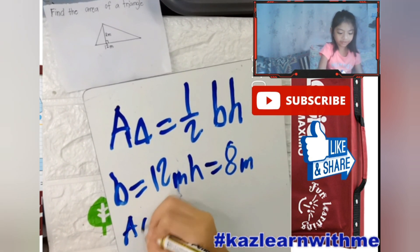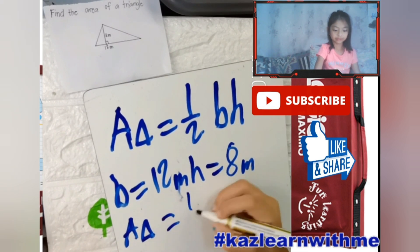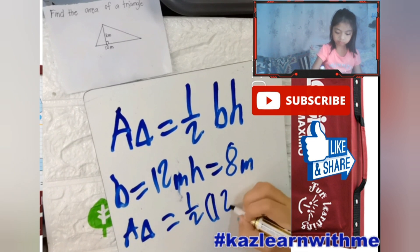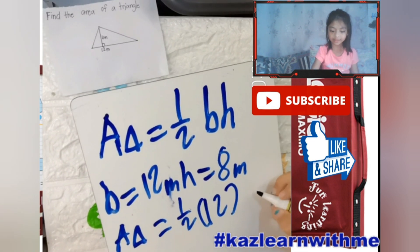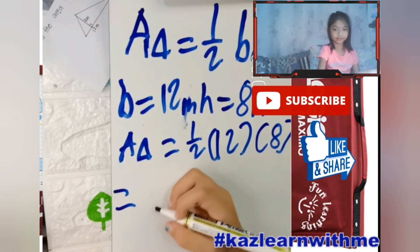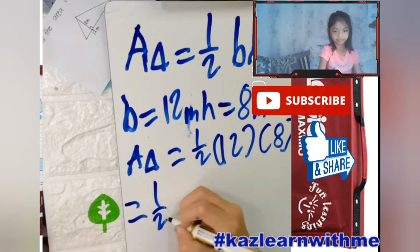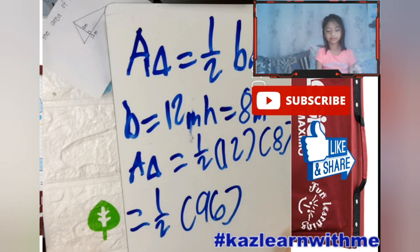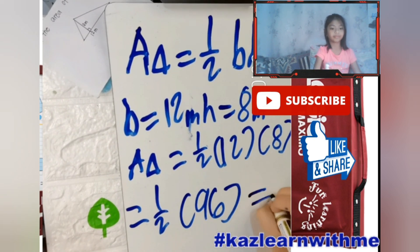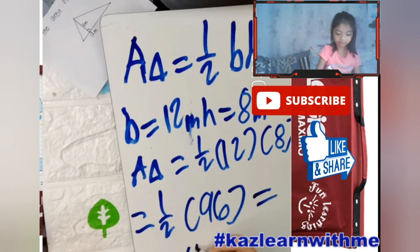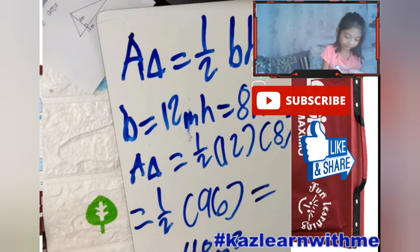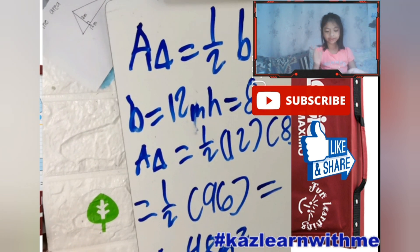And then, the area of a triangle equals one-half. Twelve times eight equals one-half — so twelve times eight equals ninety-six. And then, one-half times ninety-six equals forty-eight meters squared.